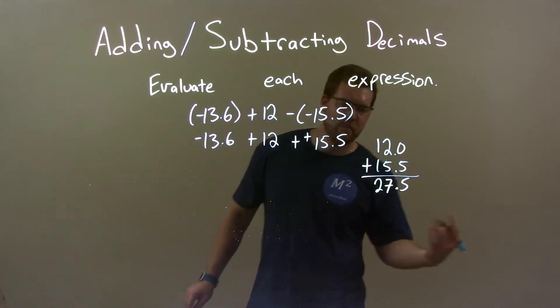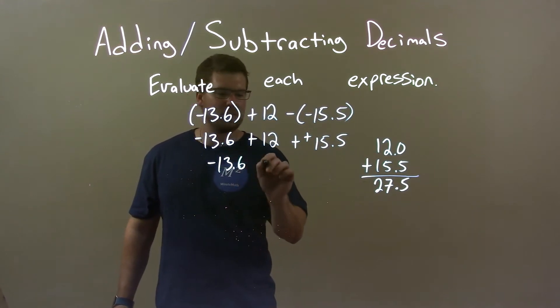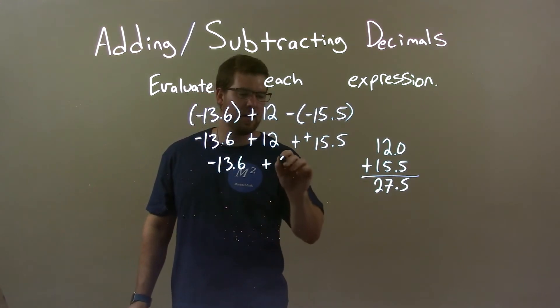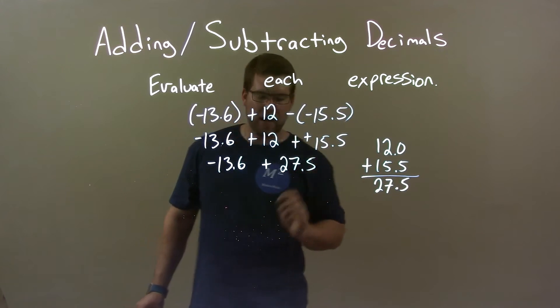Now we have 27.5. Let's put that here. Negative 13.6 plus, these two came together, 27.5. But I'm not done.